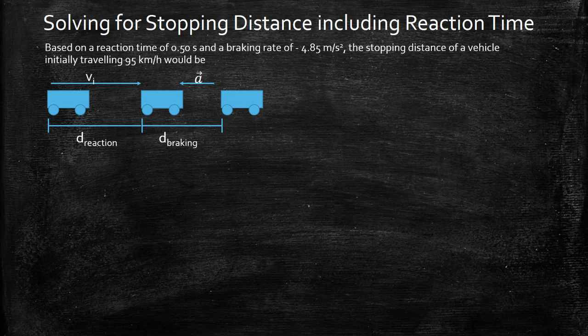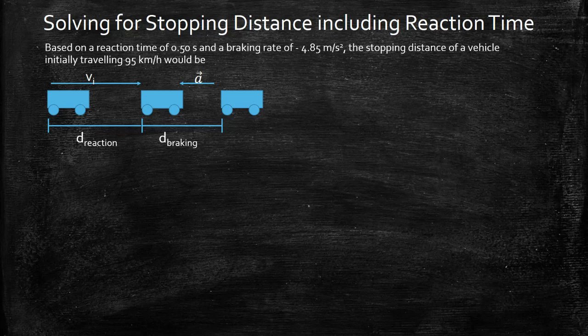Once we apply the brakes we start undergoing non-uniform motion because there's acceleration involved. During the acceleration we're going to go from our initial velocity down to zero and we're going to travel a certain distance. That's going to be the distance traveled during the braking time.